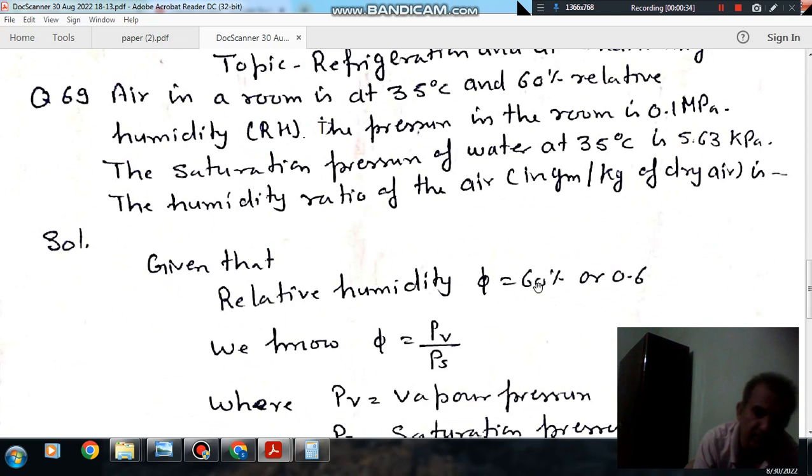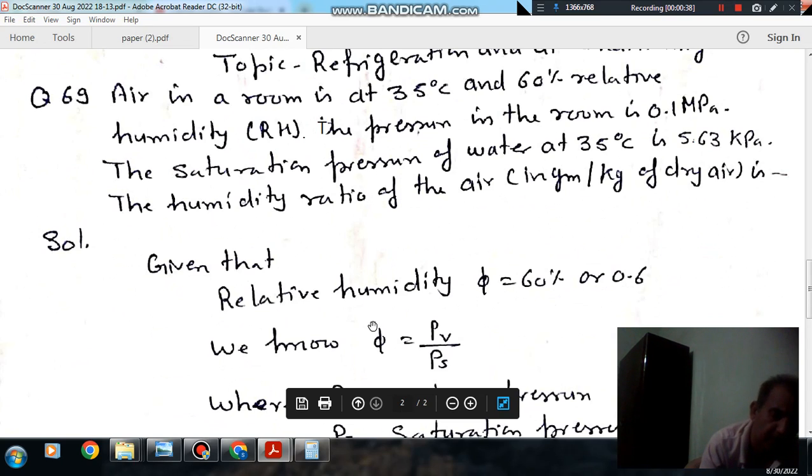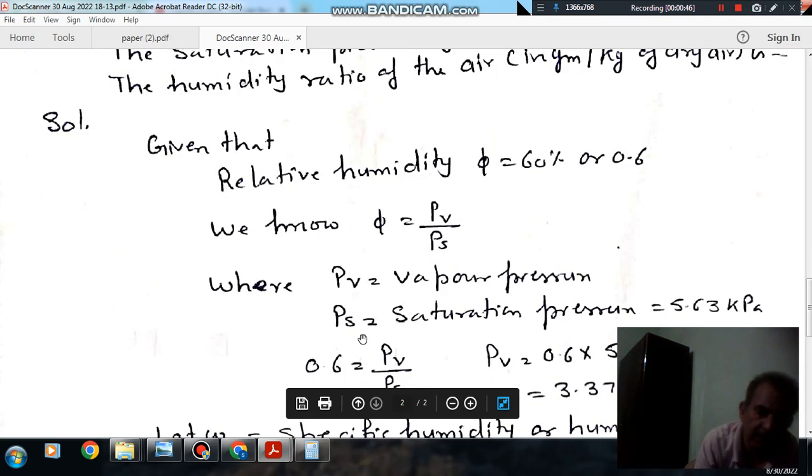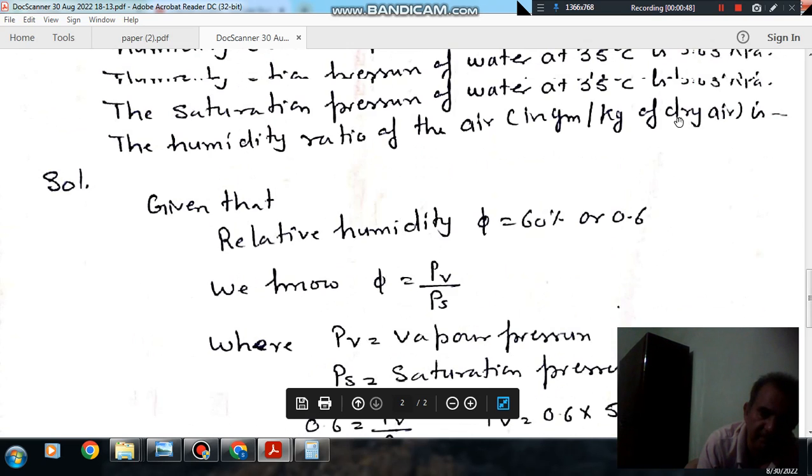Given that the relative humidity is 60% or 0.6, we know that relative humidity is the ratio of vapor pressure to saturation pressure. PV is the vapor pressure and the saturation pressure is 5.63 kPa.